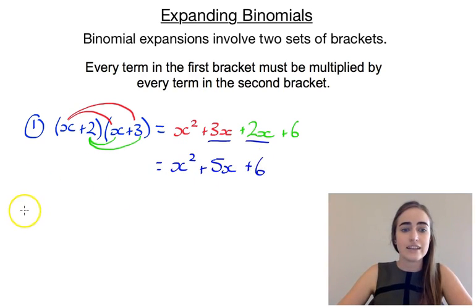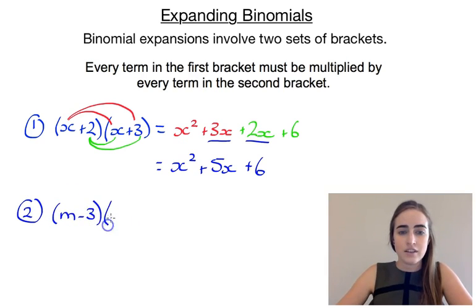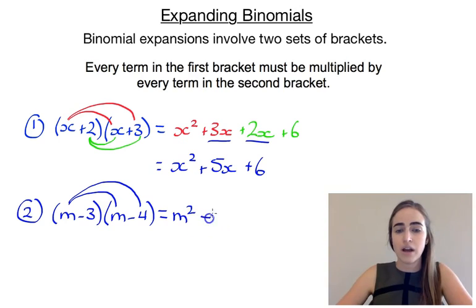Let's have a look at a second example. So if we had m minus 3, m minus 4. We're going to go m times m would give us m squared. m times minus 4 would give us minus 4m. Then we've got minus 3 times m would give us minus 3m.